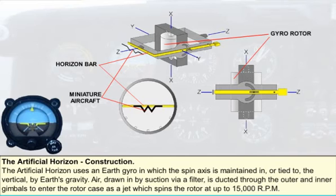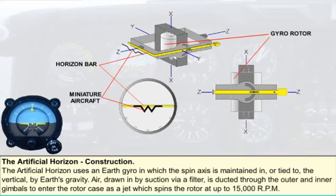An engine-driven suction pump, or venturi tube in some light aircraft, is used to create a suction of about four or five inches of mercury in the instrument case of the air-driven artificial horizon. Replacement air drawn in by this suction via a filter is ducted through the outer and inner gimbals to enter the rotor case as a jet, which spins the rotor at up to 15,000 RPM.